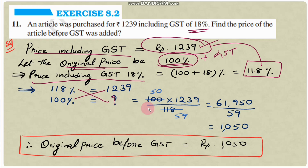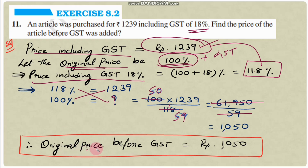Cross multiplication: 100 × 1239 / 118. Cancelling by 2: 2 into 118 gives 59, and 2 into 1239 gives 619.5 — so 50 × 1239 = 61,950, divided by 59 = ₹1050. Therefore, the original price before GST is ₹1050.